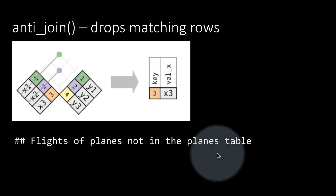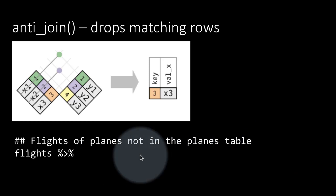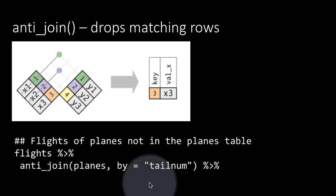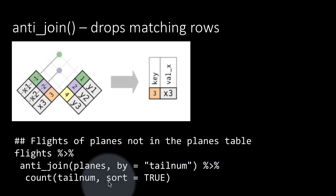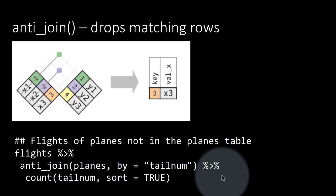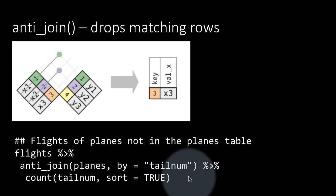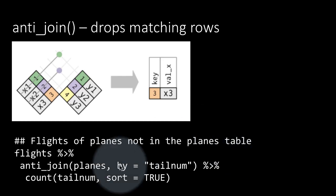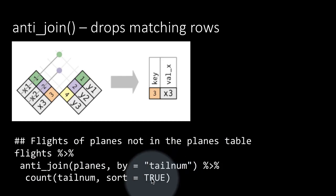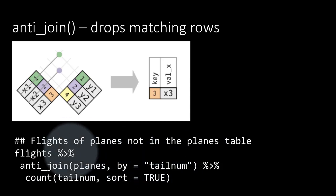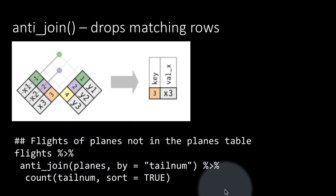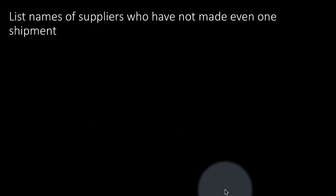Basically, we are asking: are there any planes that have made at least one flight, but those planes are not in the planes table at all? It turns out, if you do this, you will actually find that there are planes which were used in flights but which are not listed in the planes table. I don't know why that has happened, but that is actually the case.